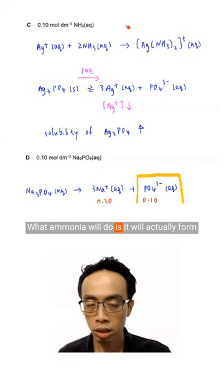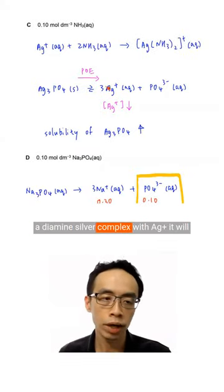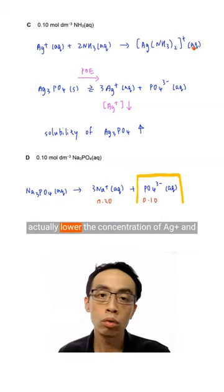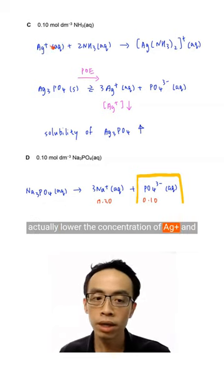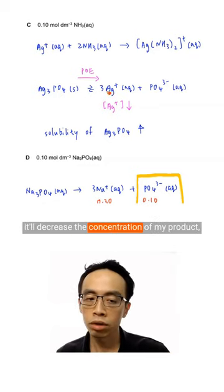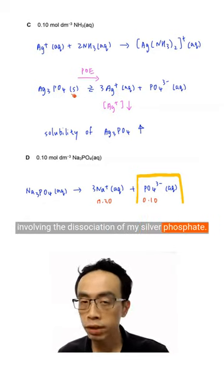What ammonia will do is actually form a diamine-silver complex with Ag+. You actually lower the concentration of Ag+, and you decrease the concentration of my product involving the dissociation of my silver phosphate.